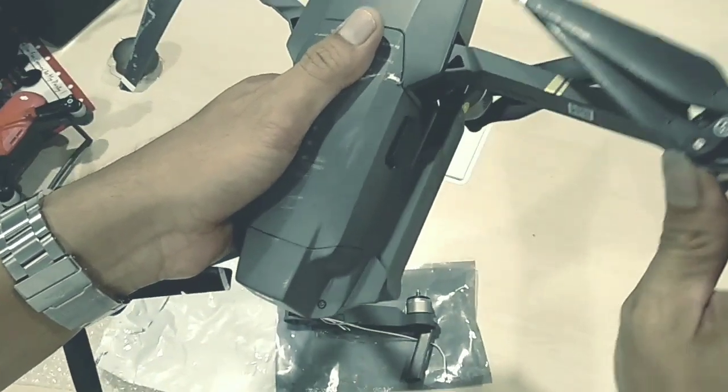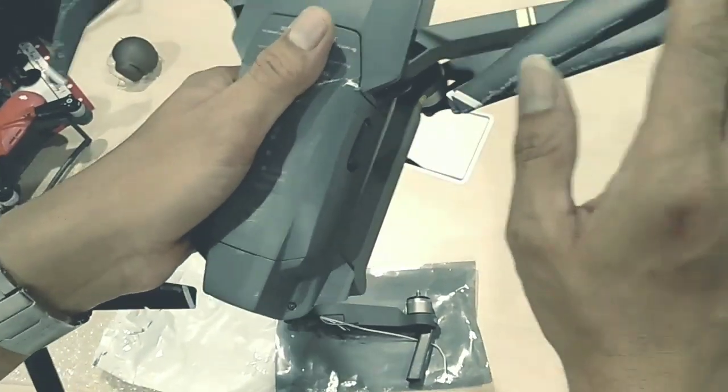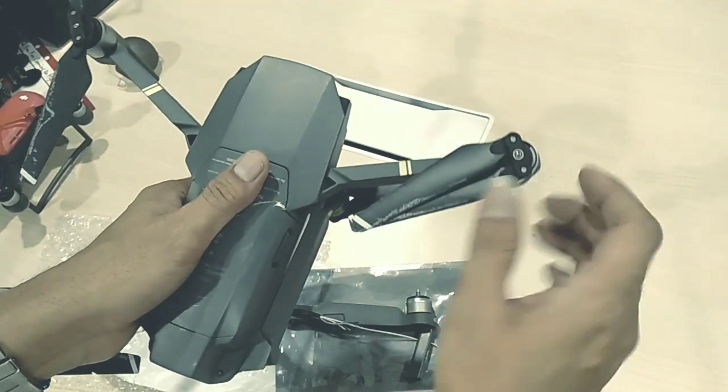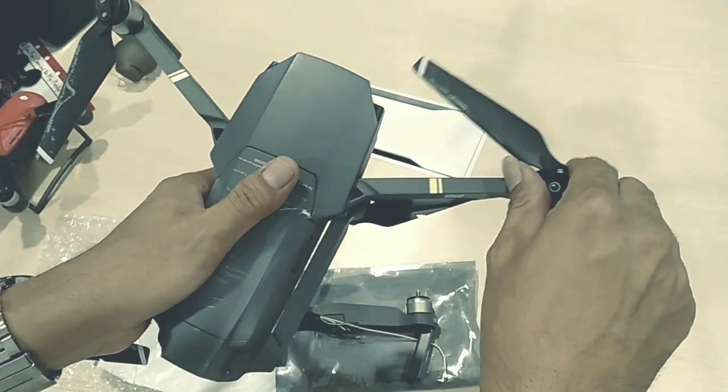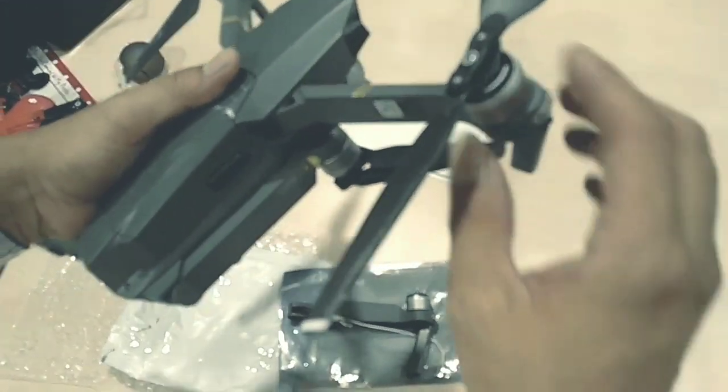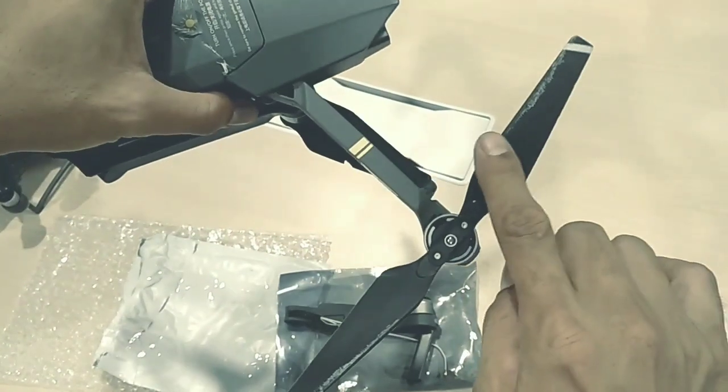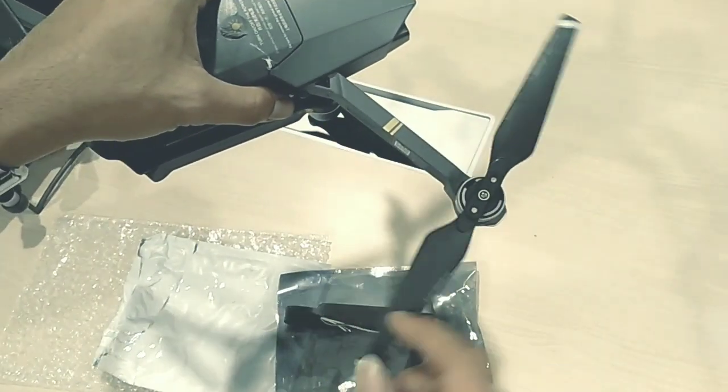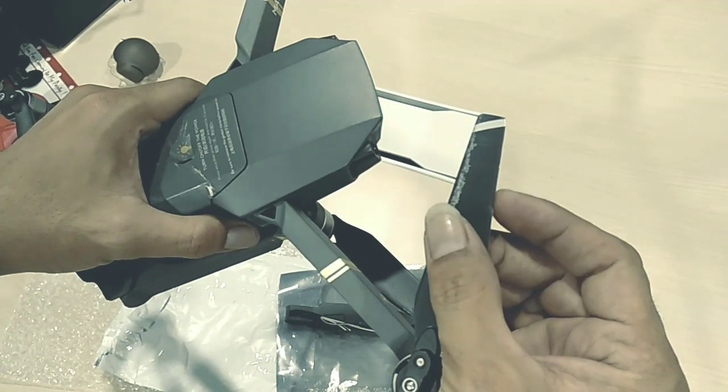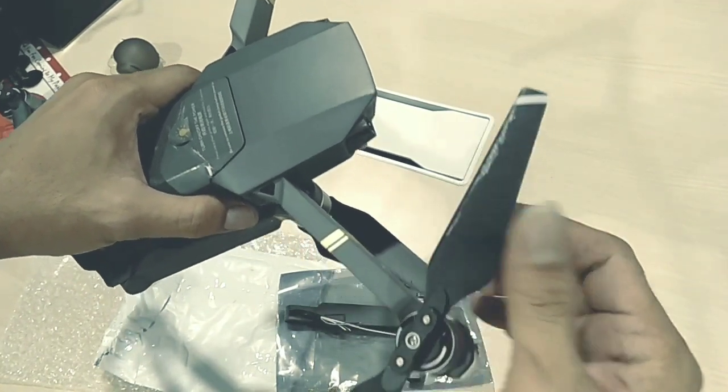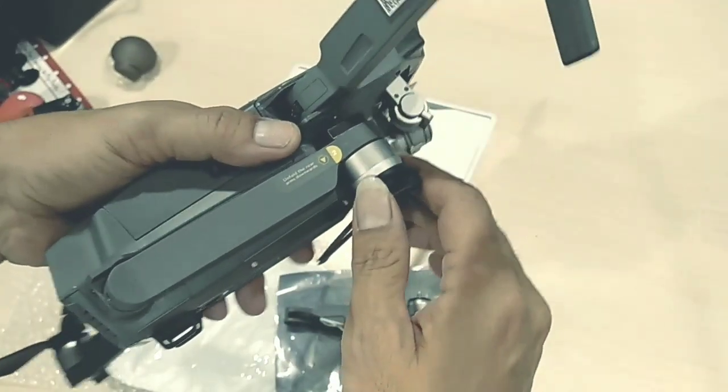And then it comes to the front right. Front right arm is the part that we're gonna replace because of the damage that it bears. Look, the propeller is okay, just a little scratch, a little dent here, taps like here. But the bottom part, look.